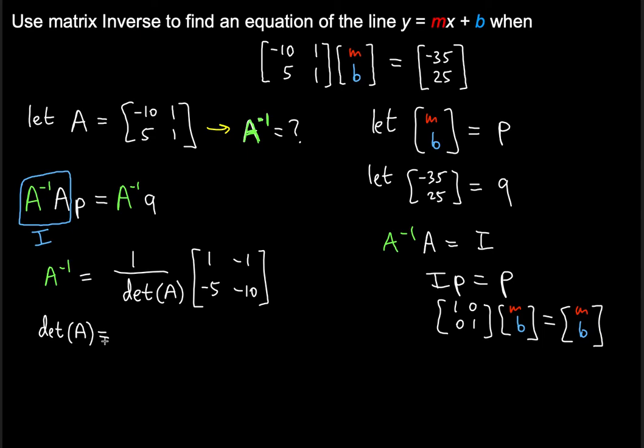Now it remains to find the determinant of A. The determinant of the square matrix A will be simply the product of the numbers in the main diagonal minus the product of the numbers in the secondary diagonal. That's going to be minus 10 minus 5, which equals minus 15. So we have found the determinant as negative 1 over 15.